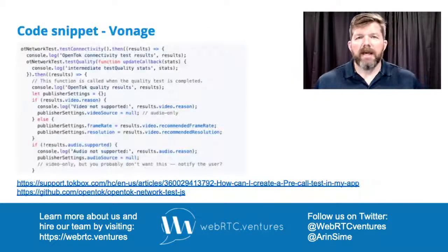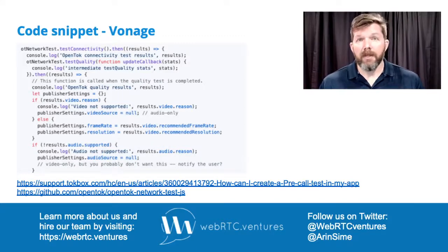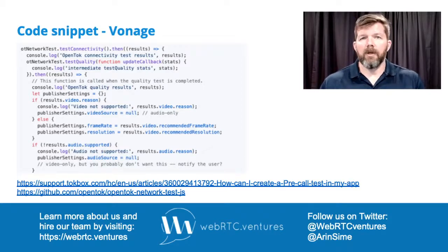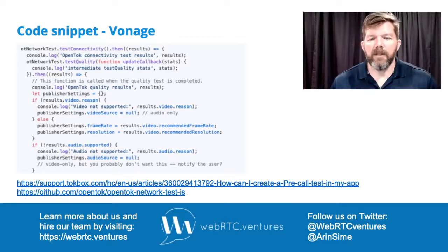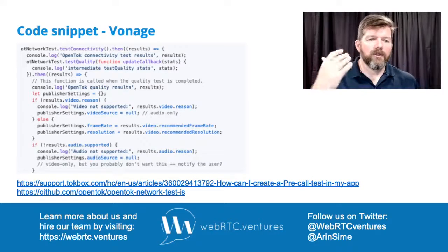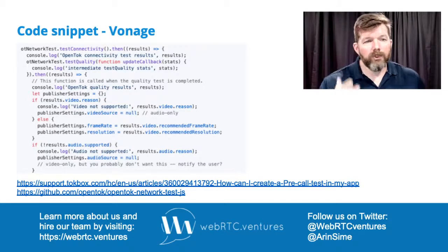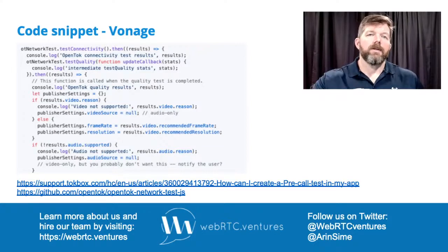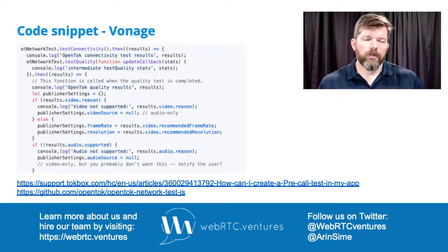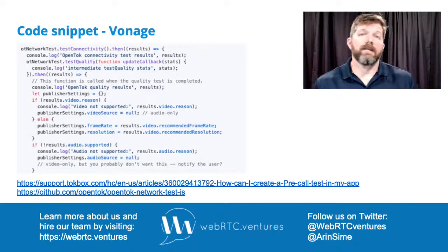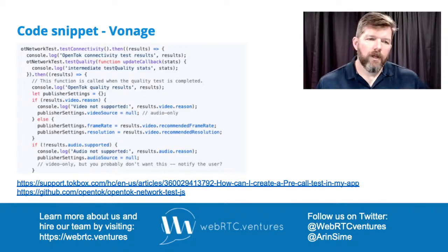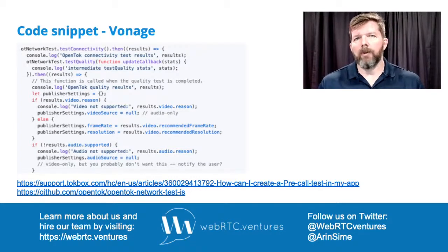So how do you implement a pre-call test? If you're using a CPaaS then they probably have something you can connect to. Here is a code snippet from Vonage, from the OpenTok Video API. You can see they have a wrapper that will do things like test your video connection, give you reasons why it didn't work that you can display to the user or act on, or test connectivity to their servers. That's an example of the network test offered by OpenTok, the Vonage video service.